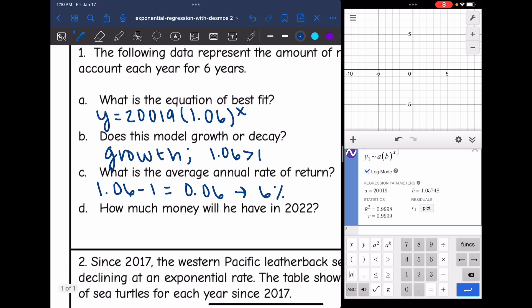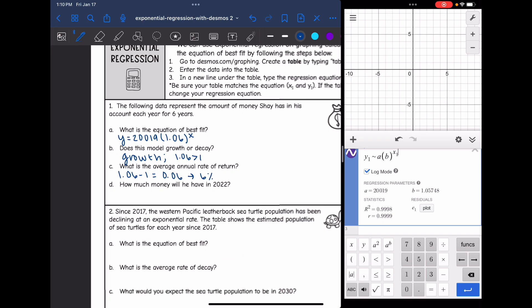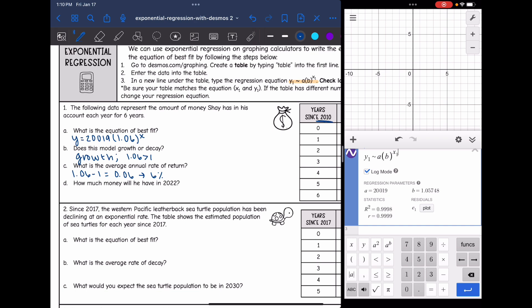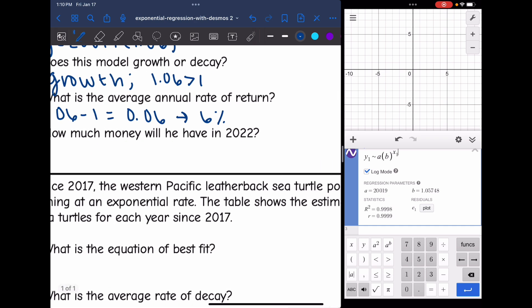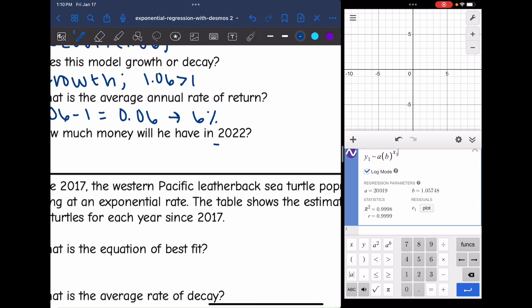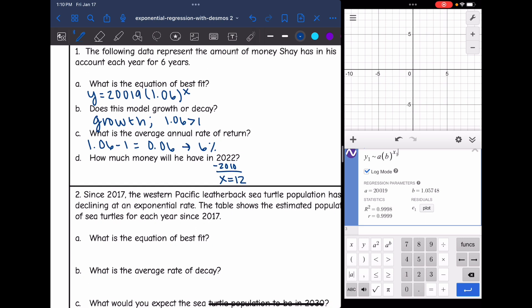And then how much money will he have in 2022? Remember, our data is years since 2010. So to figure out how much money he will have in 2022, I'm going to subtract my 2010 from it and I get 12. I'm going to replace X in my equation with 12. So I'm going to do 20,019 times 1.06 to the 12th to figure out how much money he will have in 2022.